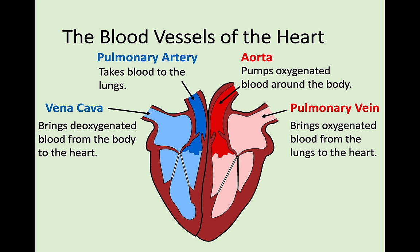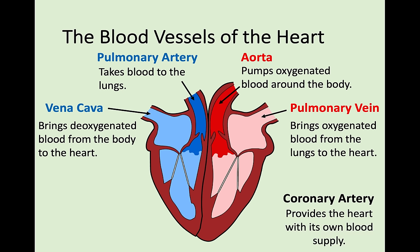The aorta pumps that oxygenated blood all around the body. Once the blood is deoxygenated - once it's used up all its oxygen and delivered it around the body - it comes back in through the vena cava and the whole process starts again. The heart also needs its own blood supply - there is another artery called the coronary artery that provides the heart with its own blood supply. You won't see it in a diagram - it might come up as a question asking how the heart gets its own blood supply.